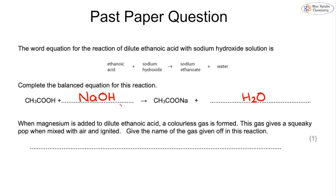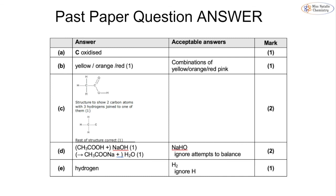When magnesium is added to dilute ethanoic acid, a colourless gas is formed that gives a squeaky pop when mixed with air and ignited — the name of this gas is hydrogen. You could write H2, but since the question says 'give the name', it's best to write hydrogen rather than the formula. Those are the answers to the past paper questions — from the domestic paper rather than the IGCSE spec since these are new statements. That's everything for topic 4F, carboxylic acids. If you have any questions, please feel free to leave a comment below and check back to the channel for new videos.